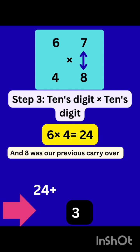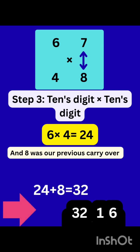And 8 was our carry over from step 2. So 24 plus 8 will be equal to 32.